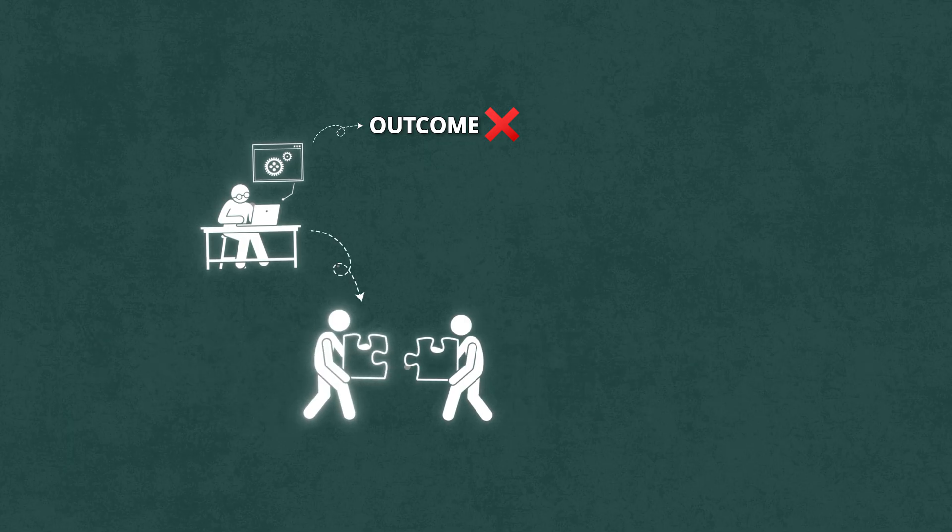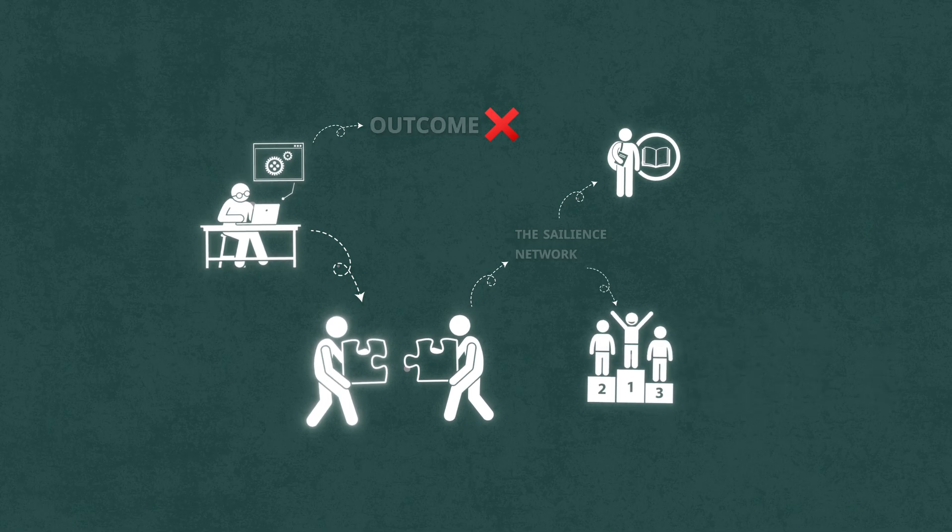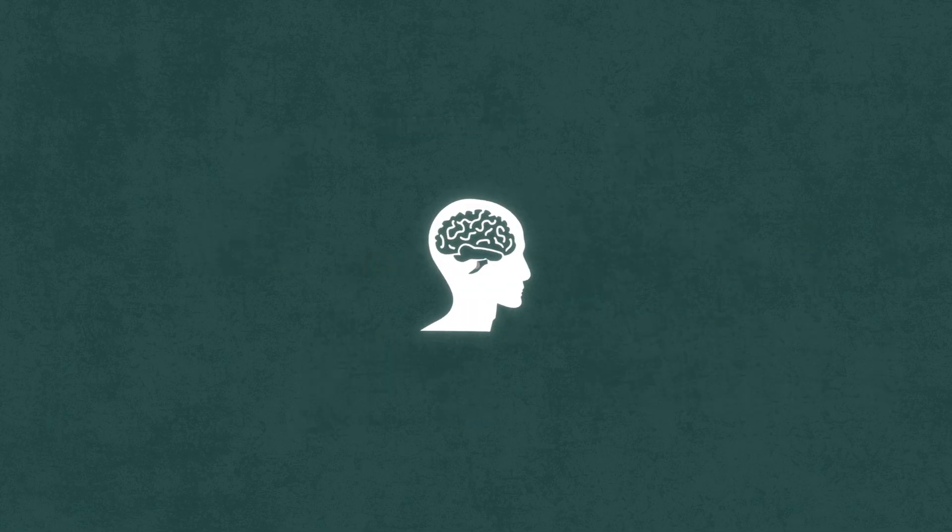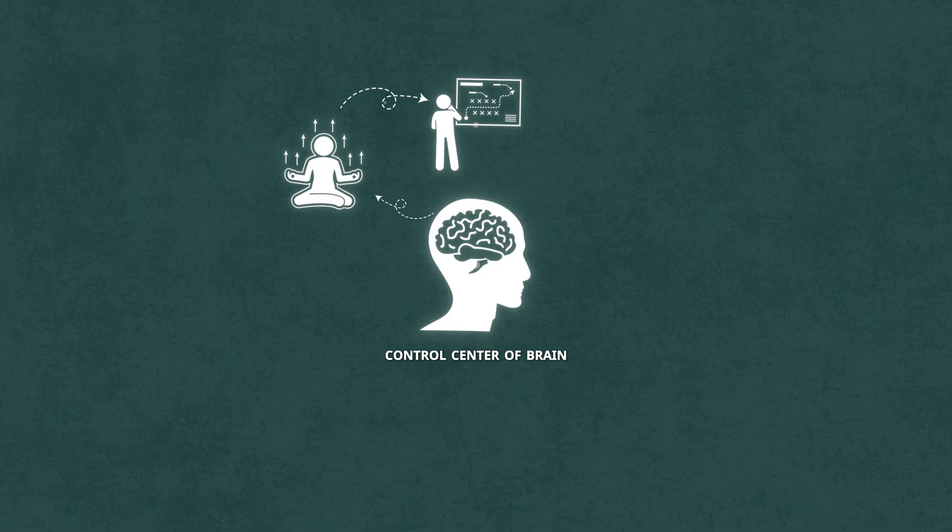And when you combine this with the salience network, you're not just focused on the right thing, you're addicted to chasing it. And finally, the third system, the prefrontal cortex, the executive control center of your brain. This is the part that turns raw energy into strategy. It's the difference between being motivated and actually making progress.